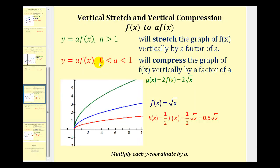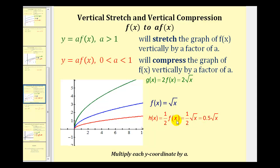So again to summarize: if we have y equals a times f of x, where a is greater than one, this will stretch the graph of the function vertically by a factor of a, which we have here in green. And if we have y equals a times f of x, where a is between zero and one, we call this a vertical compression by a factor of a, which we have here for h of x.